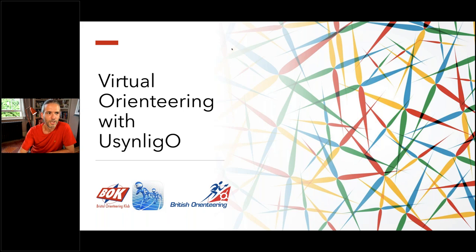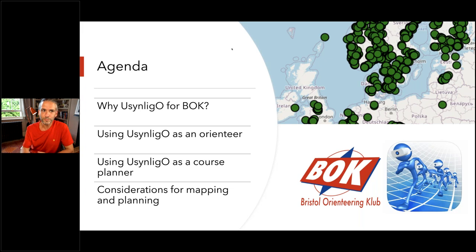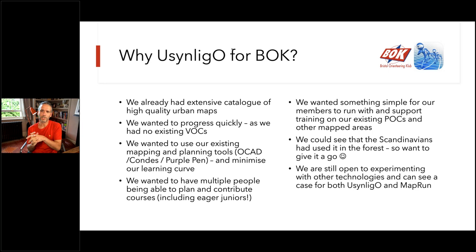I've got a couple of slides to take people through. What I'm going to cover is: why did we choose to use Usinglo for BOCK; how you can use the app as an orienteer; what it's like to use as a course planner; and a couple of considerations for mapping and planning. One thing I'll say is that a lot of the content in Pat's MapRun webinars is absolutely applicable for both apps, and we're certainly still in experiment mode, looking at both Usinglo and MapRun at the same time.